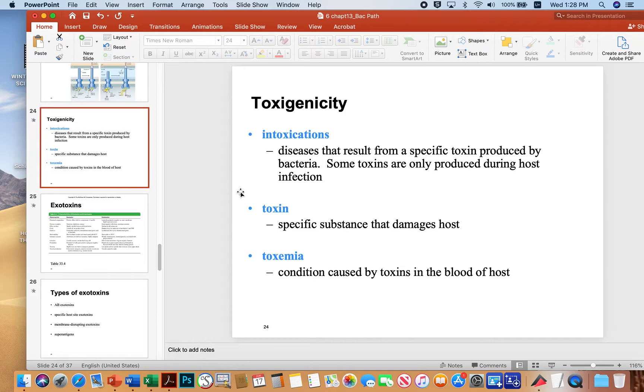Toxigenicity, there's a few terms that go along with that. One of them is intoxications. These are important, often in food microbe. These are diseases that result from a specific toxin produced by bacteria. Some toxins are only produced during a host infection. So you can break these into a few categories, but when a microbe invades the body and the primary cause of disease is because of a toxin, we can call that an intoxication.